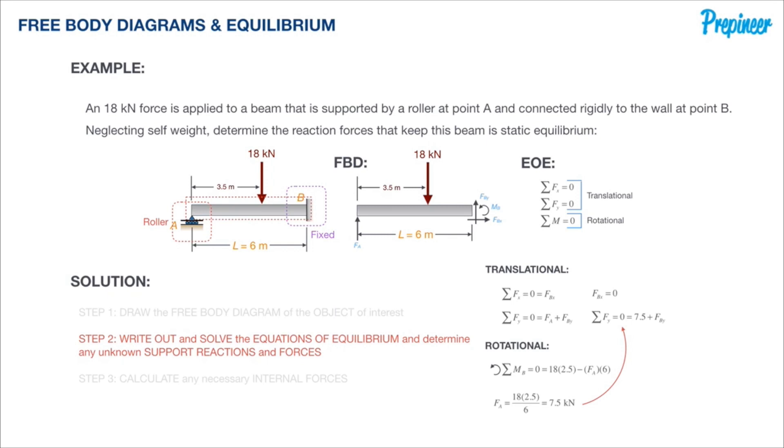Then we got minus Fa times six, because that's the full length of the beam. Rearranging to solve for F sub A, we get 18 times 2.5 divided by six.